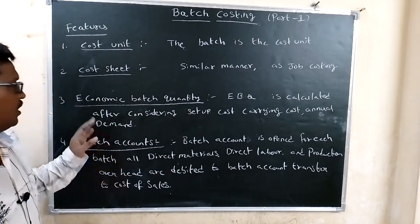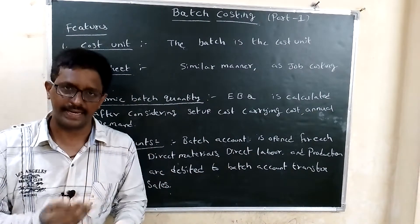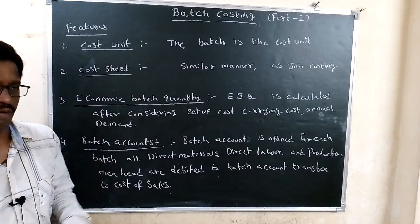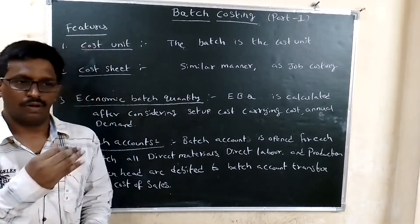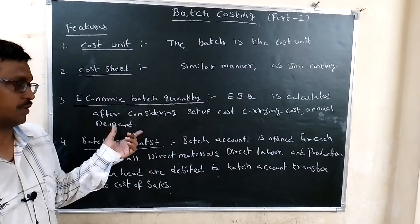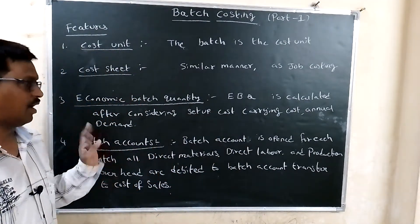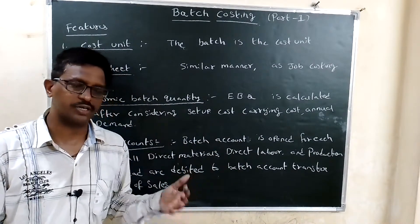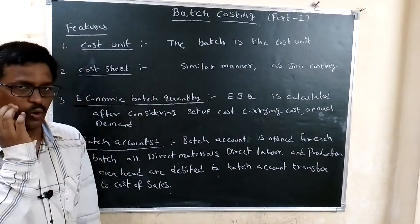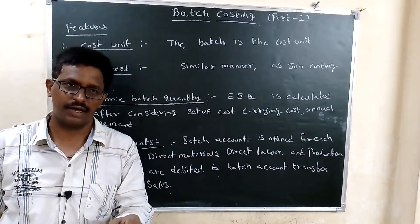Economic Batch Quantity, or EBQ — it means the optimal batch quantity. For example, in one year we may have 24,000 units. EBQ is calculated after considering set-up cost, carrying cost, and annual demand. The formula is similar to the material chapter: 2C divided by I, or 2U divided by I.